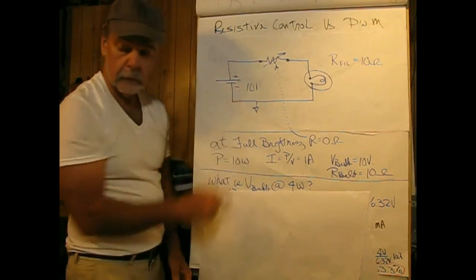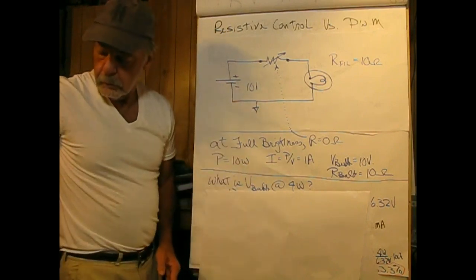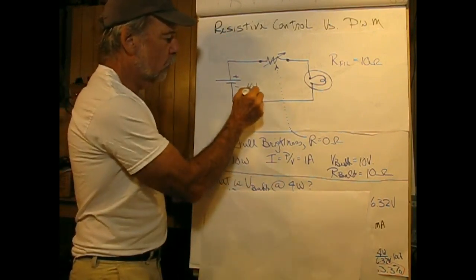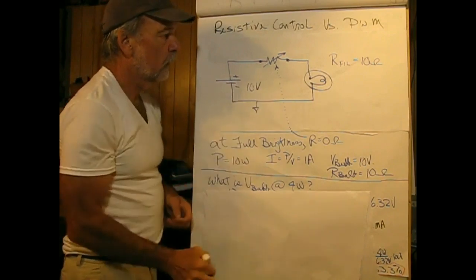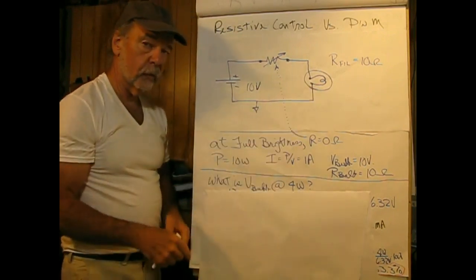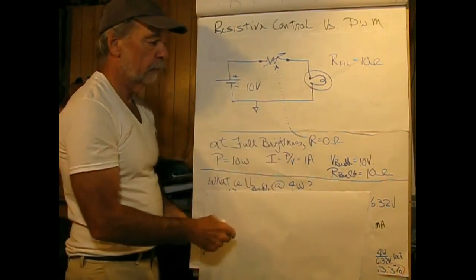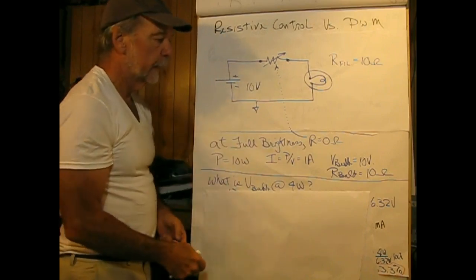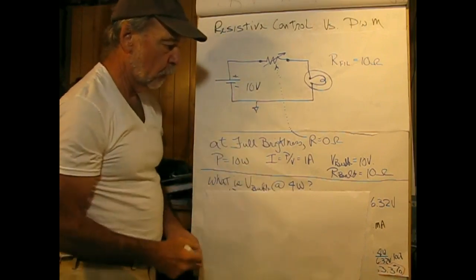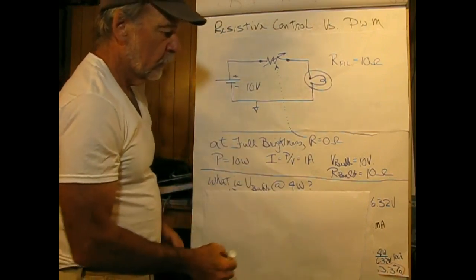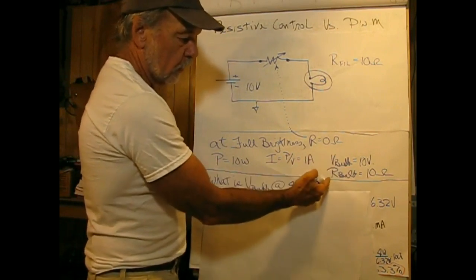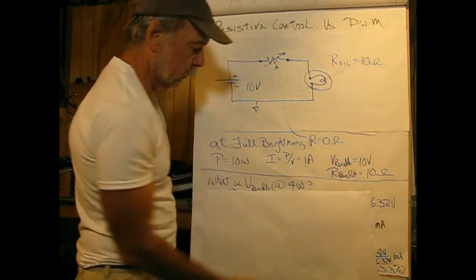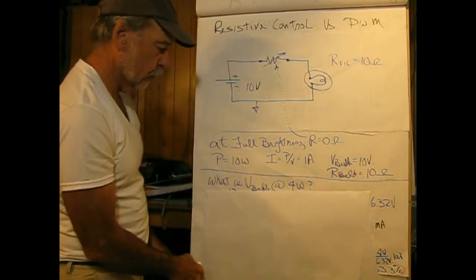That is 10 volts divided by 10 ohms, which is 1 ampere. Power is 1 ampere times 10 volts, going to be 10 watts. 10 volts across the bulb, and R_bulb is 10 ohms as given.